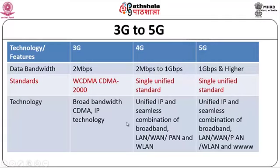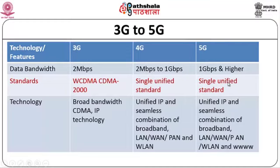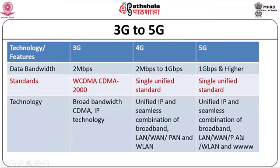Looking at the evolution from 3G to 5G: data bandwidth goes from about 2 Mbps in 3G, to 2 Mbps–1 Gbps in 4G, and 5G aims at 1 Gbps and higher. In terms of standards, 3G had two — WCDMA and CDMA2000 — while 4G has a single unified standard, and 5G aims for the same. In terms of technology, 3G uses broadband CDMA and IP, while 4G and 5G use unified IP and seamless combination of broadband LAN, WAN, PAN, WLAN, and 5G adds WWW wireless worldwide web access.